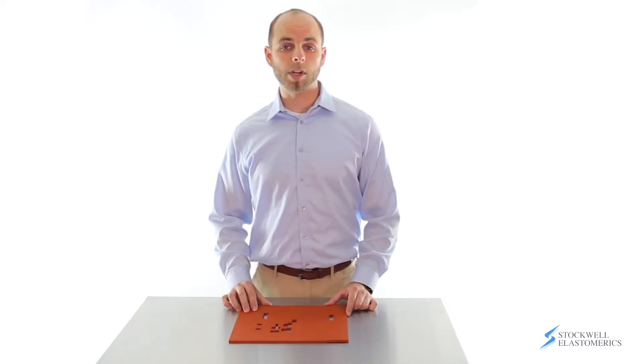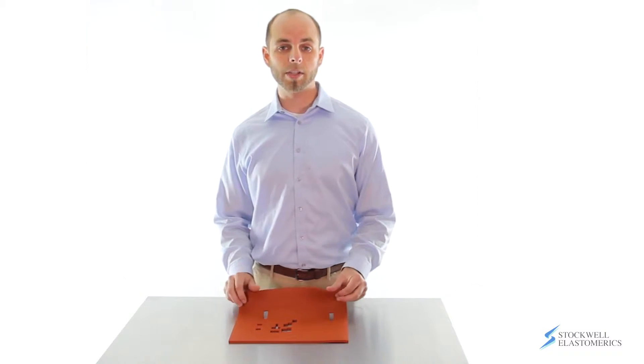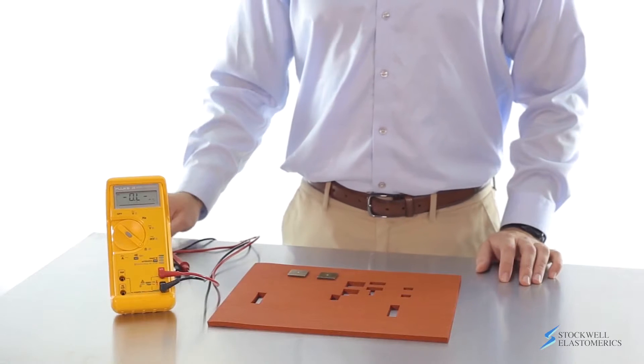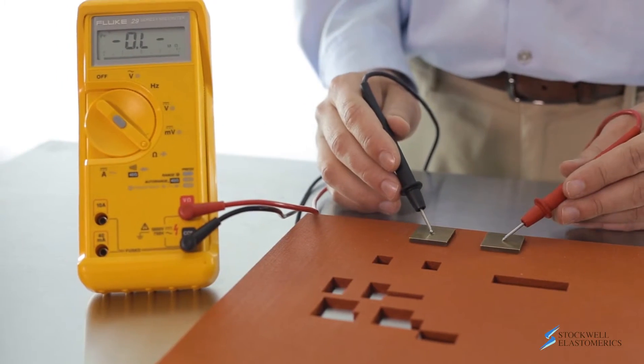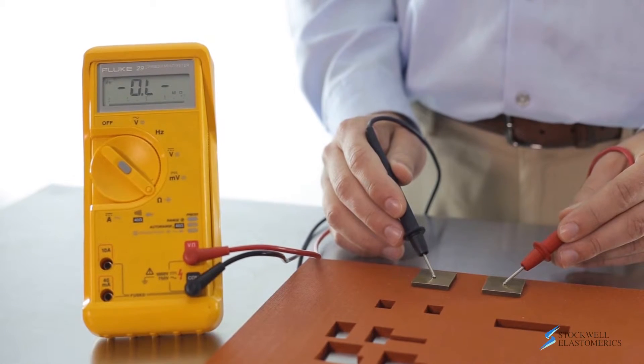This is an advantage for a lot of our customers who are working with high voltages because silicone is a very good insulator. We can measure the surface resistance of silicone sponge using these two brass plates and a multimeter. We can see here there is no current flowing.